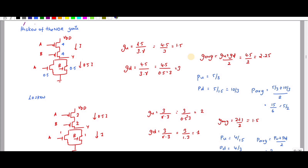For the parasitic delay, the number of transistors connected to the output is 4, 0.5, and 0.5, giving 5. So p_u = 5/3. For p_d, p_d = 5/1.5. p_average = (5/3 + 10/3) / 2 = 5/2.